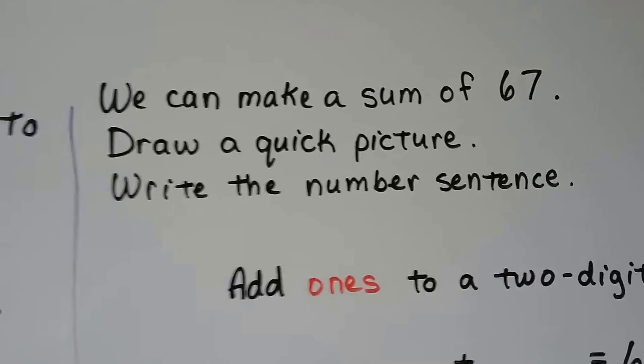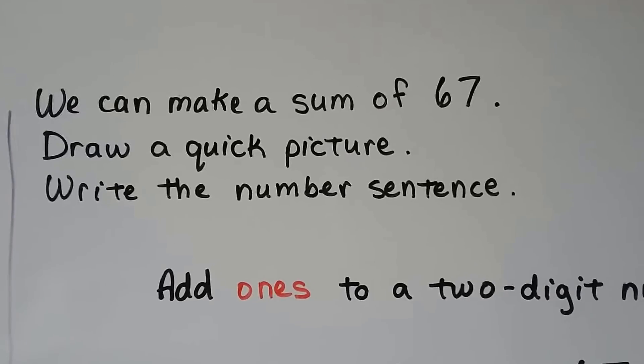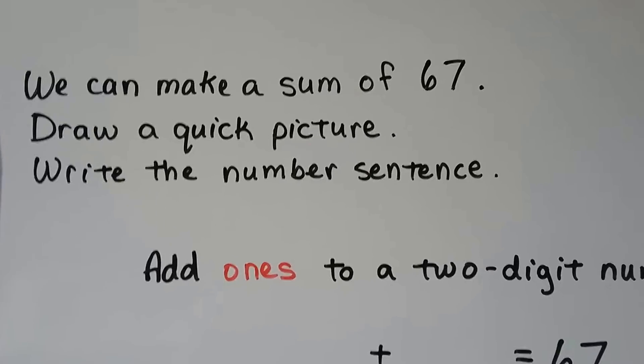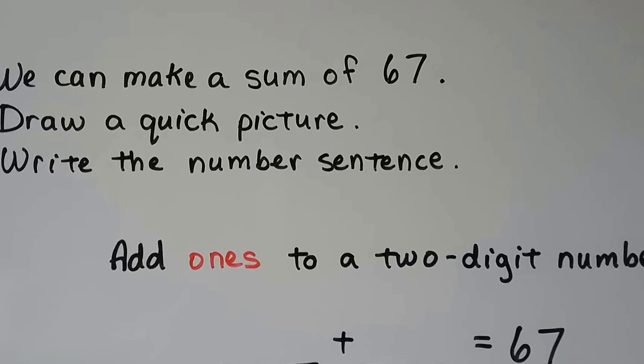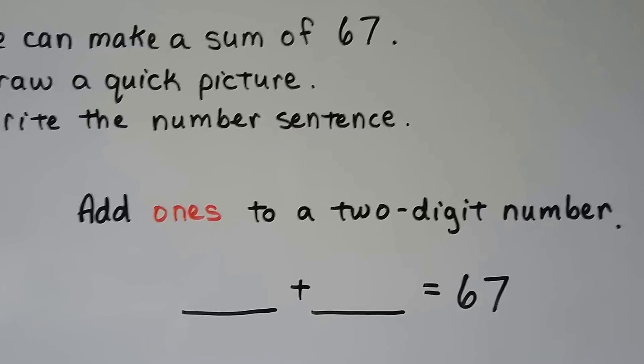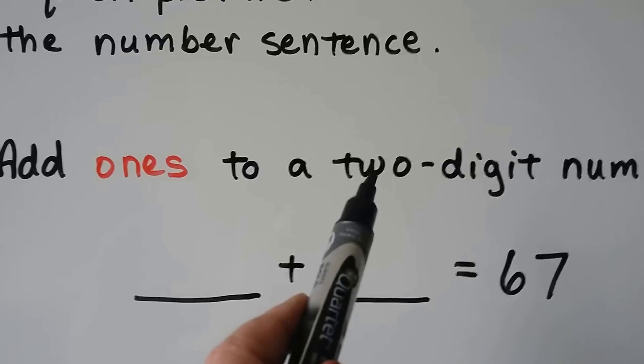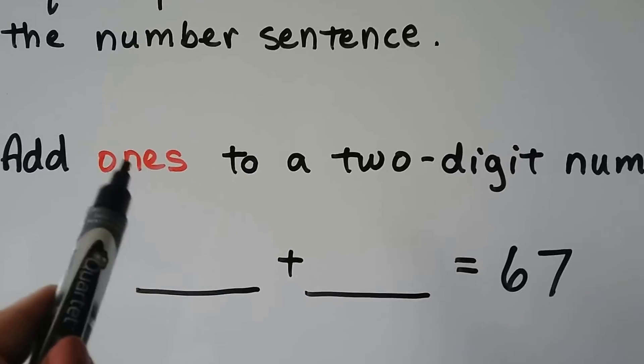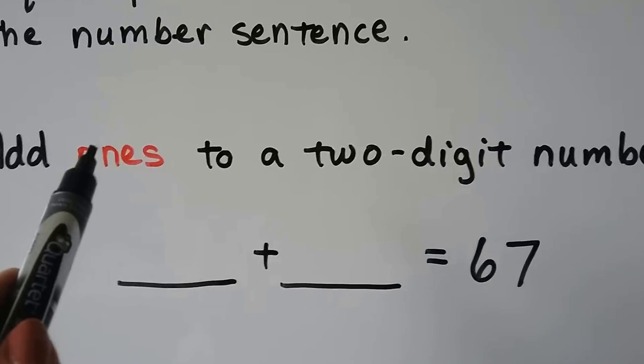We can make a sum of 67, draw a quick picture, write the number sentence. We need to add 1s to a 2-digit number. So we need a 2-digit number. And it says to add only 1s, no 10s.